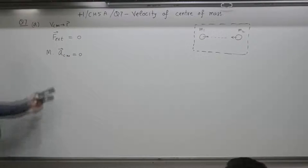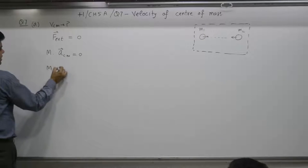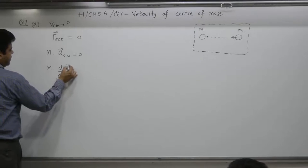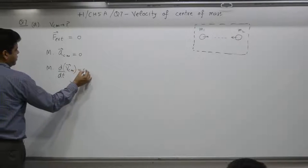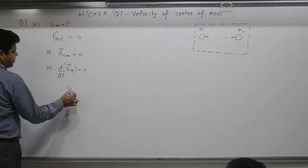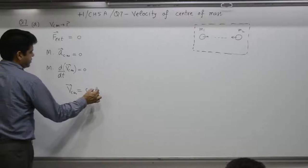Mass of the system into acceleration of center of mass is equal to 0. In the same chapter 3, F is equal to M A. M, acceleration of center of mass means DDT of velocity of center of mass is equal to 0. It means what? Velocity of center of mass is constant.